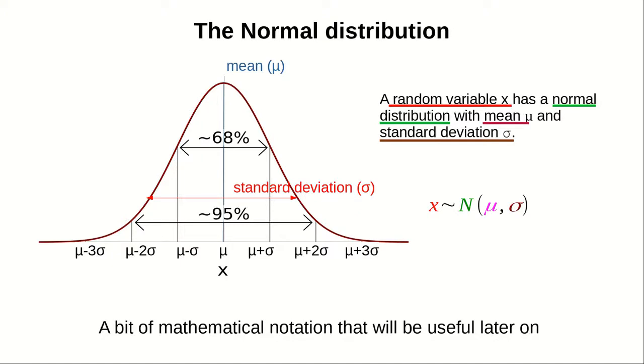A normal distribution is this bell-shaped distribution. It's very characteristic of natural populations and is mathematically well-defined. Obviously, you don't need to learn the formula here, but it is important that you learn some mathematical notation that will be useful later on.